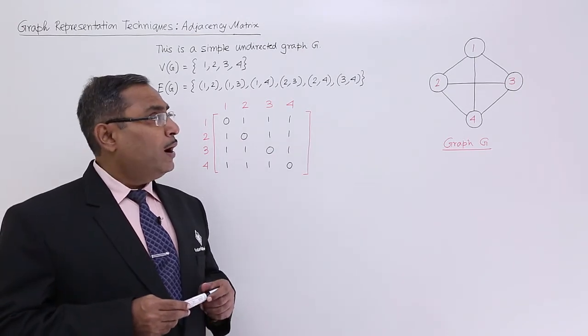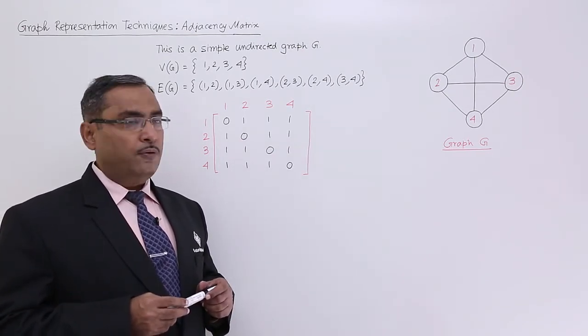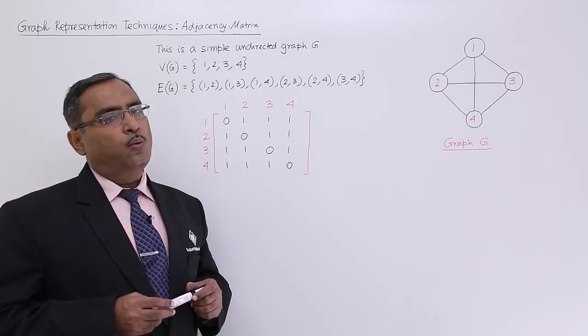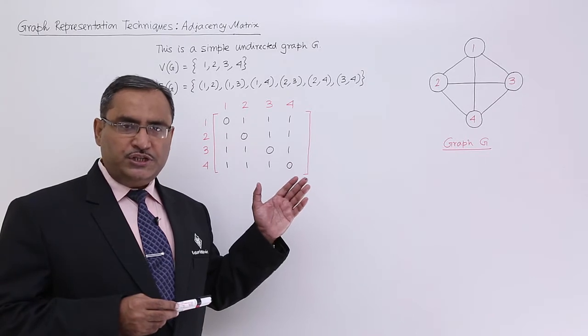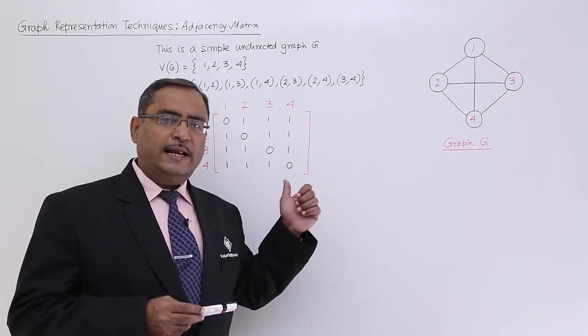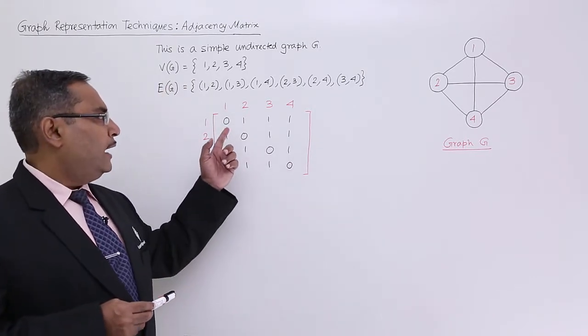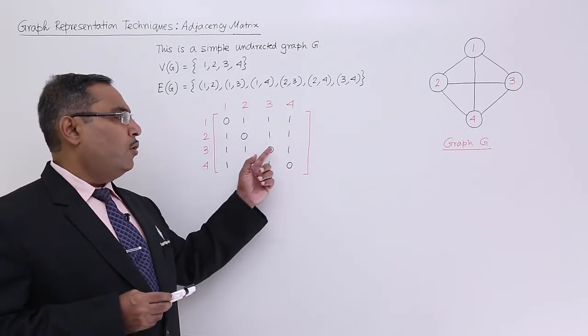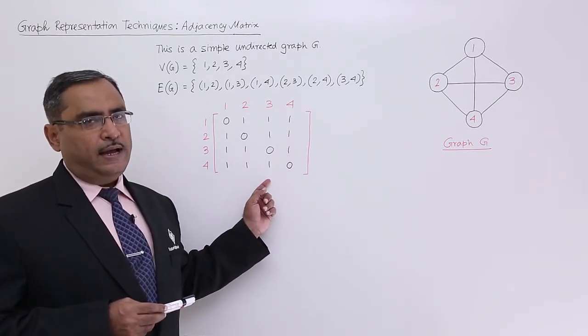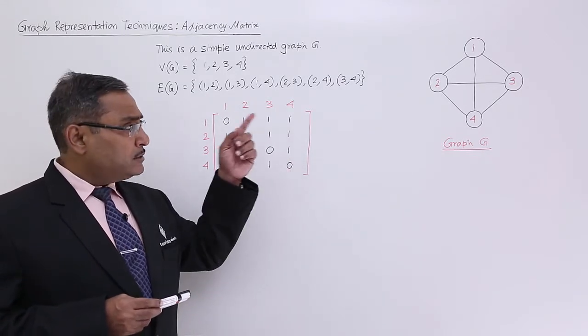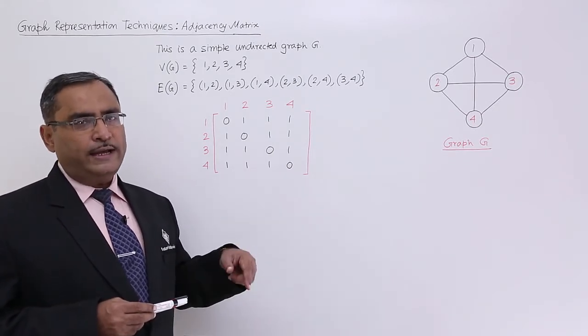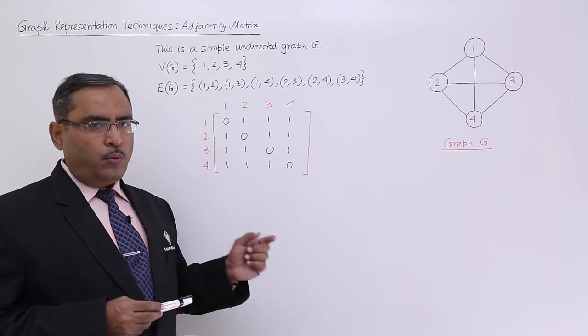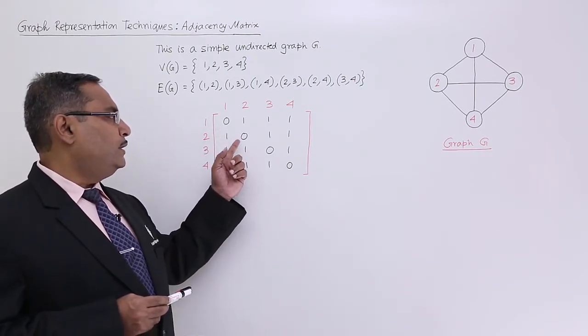Now here you see, 1 is adjacent with 2, 3, 4; 2 is adjacent with 1, 3, 4 and so on. So that is why all the nodes are adjacent to each other - any pair of nodes are adjacent. That is why I am writing 1 for all the locations except at the diagonal places. Because at the diagonal places, 1 is not adjacent to 1 because there is no edge or loop from 1 to 1 again.